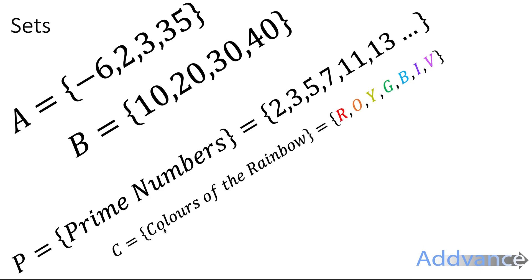Another set here is the colors of the rainbow, set C, which is red, orange, yellow, green, blue, indigo, violet. And here I've got set V of the vowels: A, E, I, O, U. All of these are sets, and notice that sets don't necessarily have to be lists of numbers. They can be lists of anything.